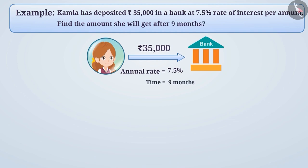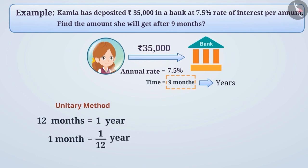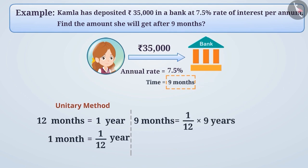This is a very interesting question. Here, we have to take care of certain conditions. The first thing is to note that the time is given in months. Therefore, it is necessary to convert it into years using the unitary method. As we know, 12 months is equal to 1 year. Therefore, 1 month is equal to 1/12 year. Now, 9 months is equal to 9/12, which in its simplest form can be written as 3/4 years.